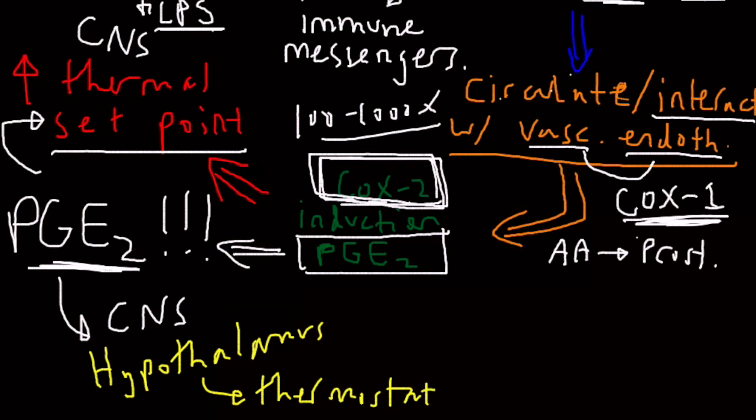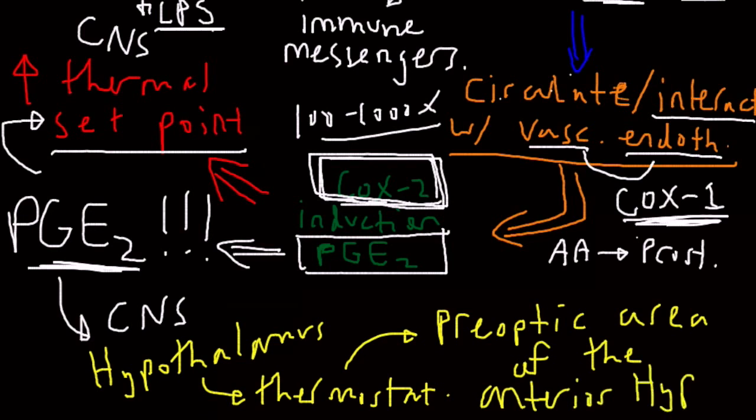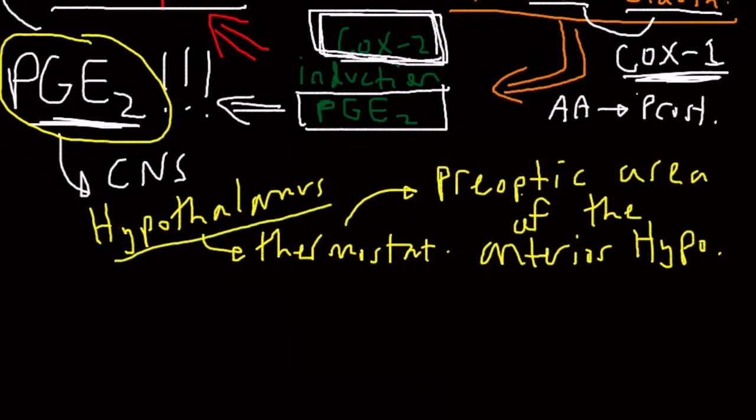And specifically, for those of you who are neurologically inclined, the preoptic area of the anterior hypothalamus. This is the site of the massive PGE2 induction, and this causes an increase in firing of the neurons in the hypothalamus. This increased firing increases the set point of the body.